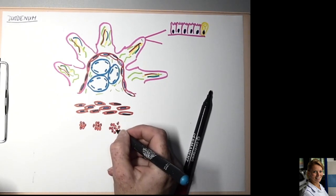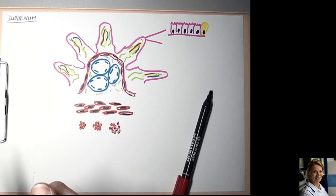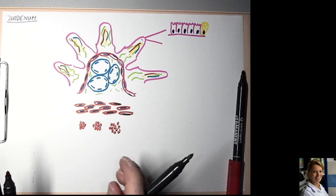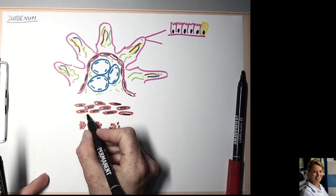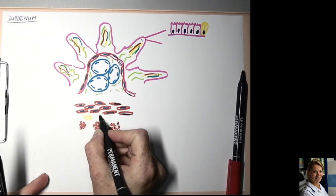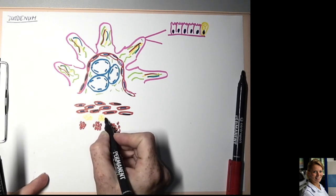Between the circular and longitudinal layers of smooth muscle cells, you can find myenteric plexus of Auerbach. I am drawing it.